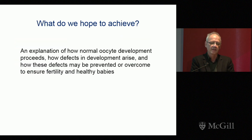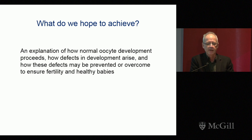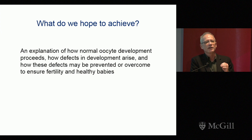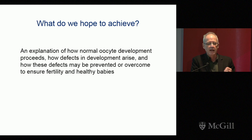At the end of the day, what we hope to achieve is an explanation of how normal oocyte development proceeds and how defects in that developmental process can arise. And then lastly, and perhaps most importantly, how these defects might be prevented or overcome to ensure fertility and healthy babies. Thank you.